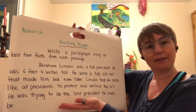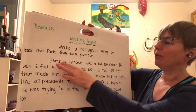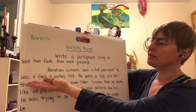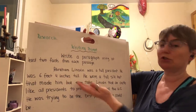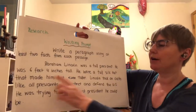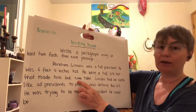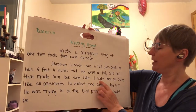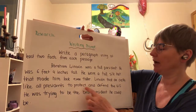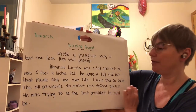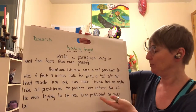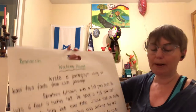This is my example. Abraham Lincoln was a tall president. He was six feet four inches tall. He wore a tall silk hat that made him look even taller. Lincoln took an oath like all presidents to protect and defend the United States. He was trying to be the best president he could be.